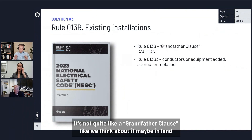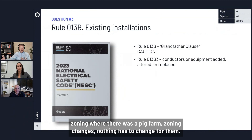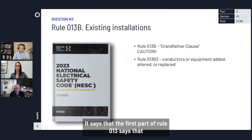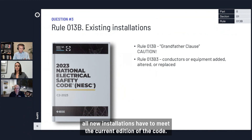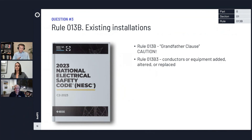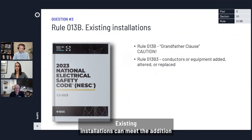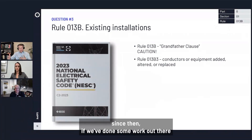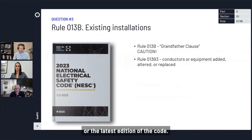It's not quite like a grandfather clause as we think about it in land zoning — where, say, a pig farm exists and zoning changes but nothing has to change for them — but it is a little bit like that. Rule 013 says that all new installations have to meet the current edition of the code. Existing installations can meet the edition in effect when they were installed, any edition they've been brought up to since, or the latest edition of the code.